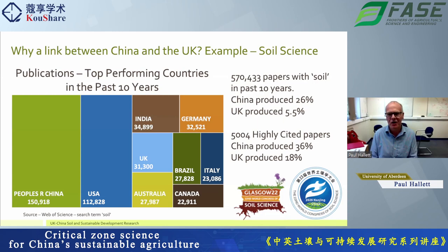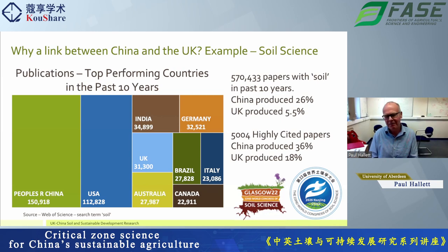Looking at the total number of publications, China by far leads the world — 26% of all papers written with the word 'soil' came from China. The UK competes very well with similarly sized countries like Germany. When we look at research impact, there were 5,000 highly cited papers within this. China produced over a third of those; the UK produced 18%. So together, we're producing over half of the highly cited work in soils in the world. We also hosted the World Congress of Soil Science in Glasgow this year, and the next World Congress of Soil Science in 2026 will be held in Nanjing.